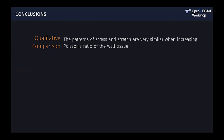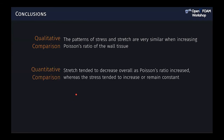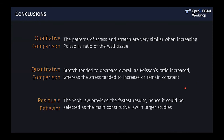In conclusions: the qualitative comparison showed similar patterns of stress and stretch across Poisson ratios. Quantitatively, stretch tended to decrease overall as Poisson ratio increased, while stress had different behavior depending on the hyperelastic law — approximately constant for some and increasing for others. This guides the choice of hyperelastic law: based on the residual behavior, the Yeoh law was the fastest, and results were not very different from the other laws, making it suitable for larger studies simulating multiple aneurysm geometries important for the medical community.